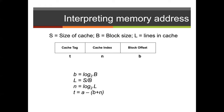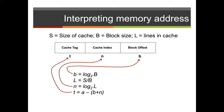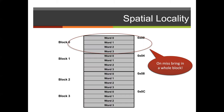L represents the number of lines in our direct mapped cache. T, N, and B are computed based on what we know about the cache. The block offset is the word number within the block that we've chosen. In our previous example, the word number would be represented as 0, 1, 2, or 3 for each of our blocks.